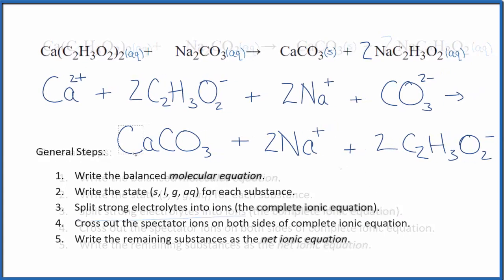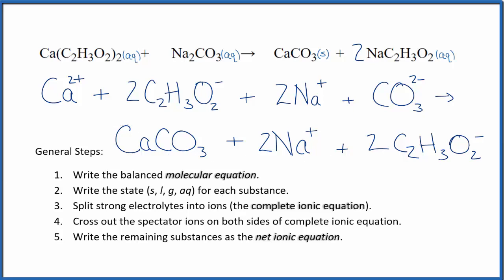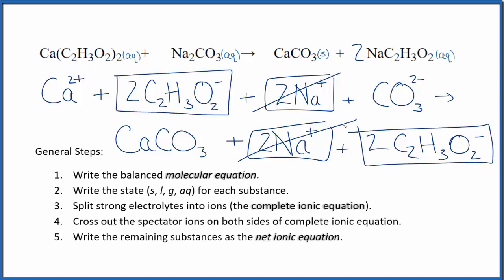That'll look like this. At this point we can cross out the spectator ions - they're on both sides of the net ionic equation. I can see that there are two sodium ions here in the reactants and two in the products - those are spectator ions, we can cross those out. Two acetate ions here in the reactants and two in the product - spectator ions, cross them out. What's left - that's the net ionic equation for calcium acetate plus sodium carbonate.